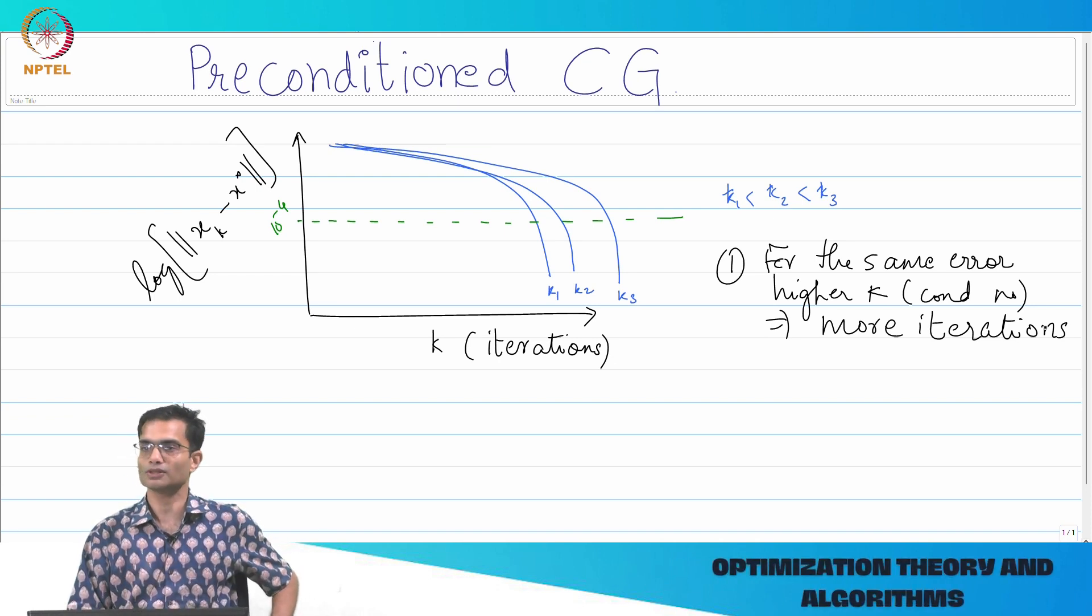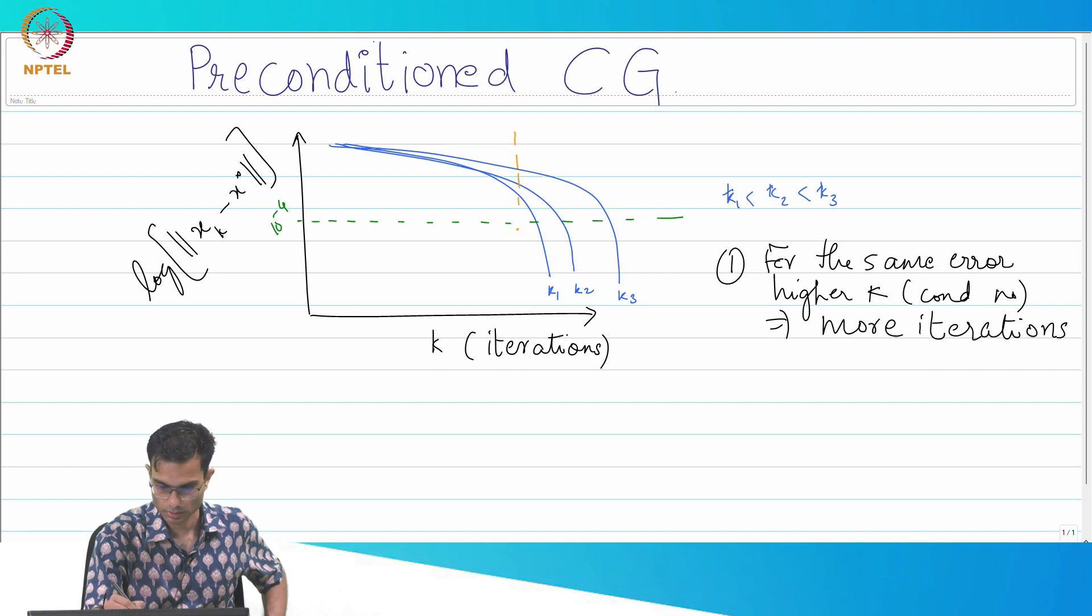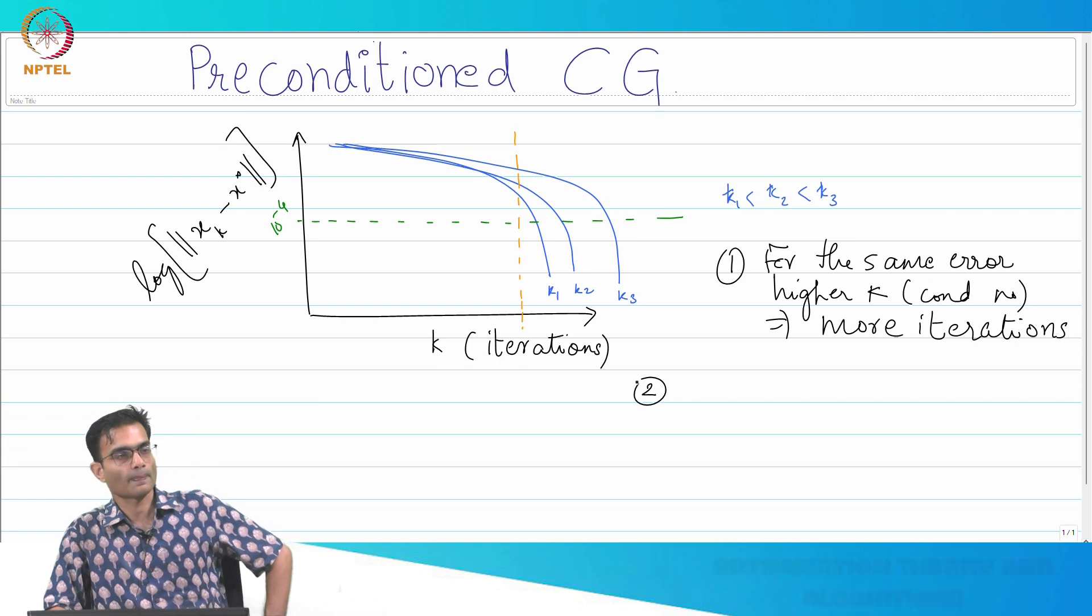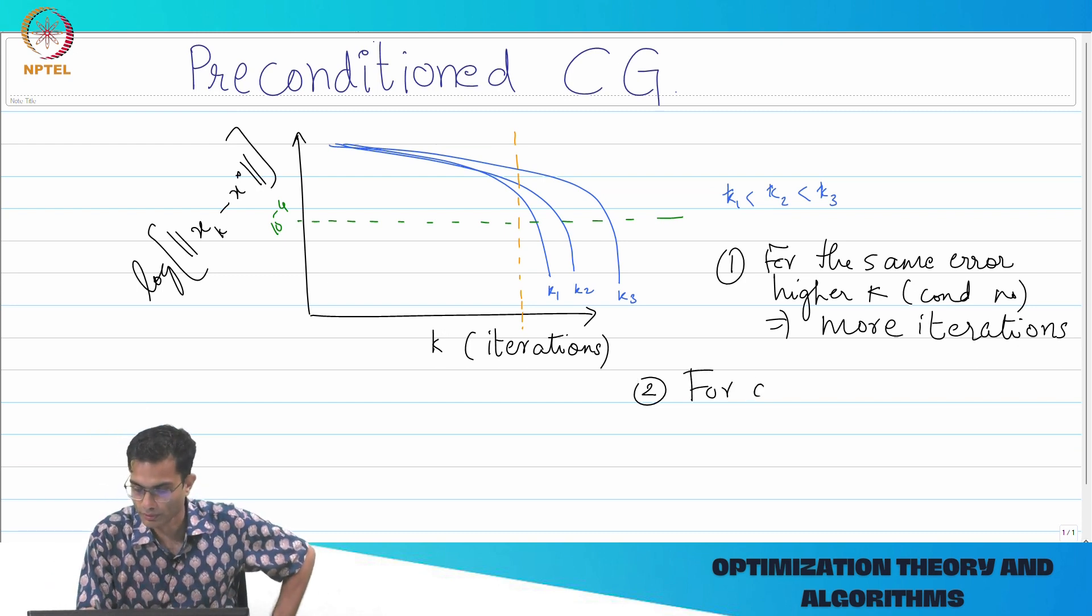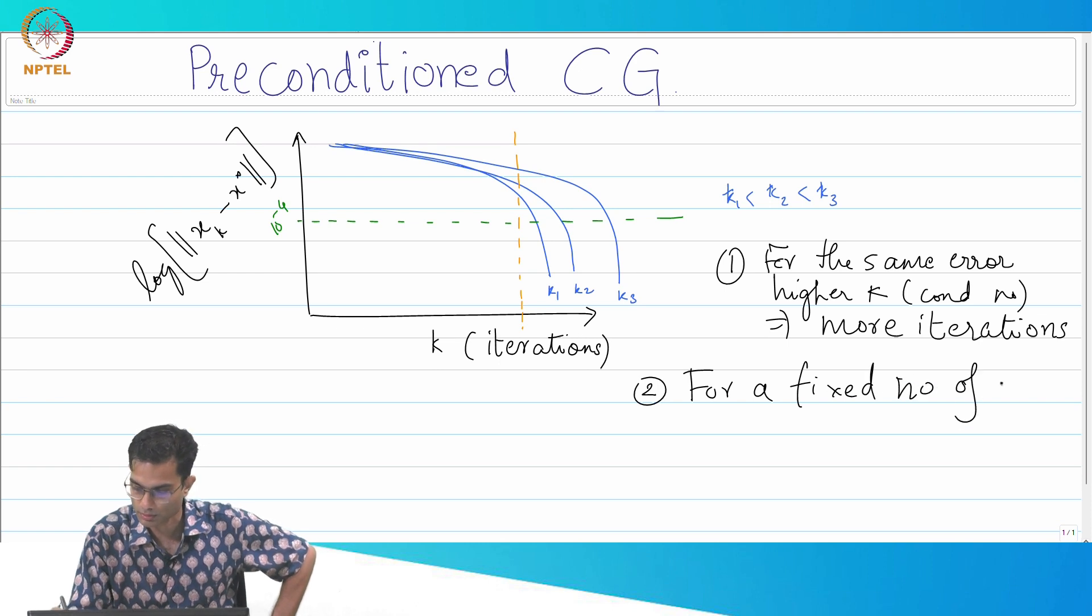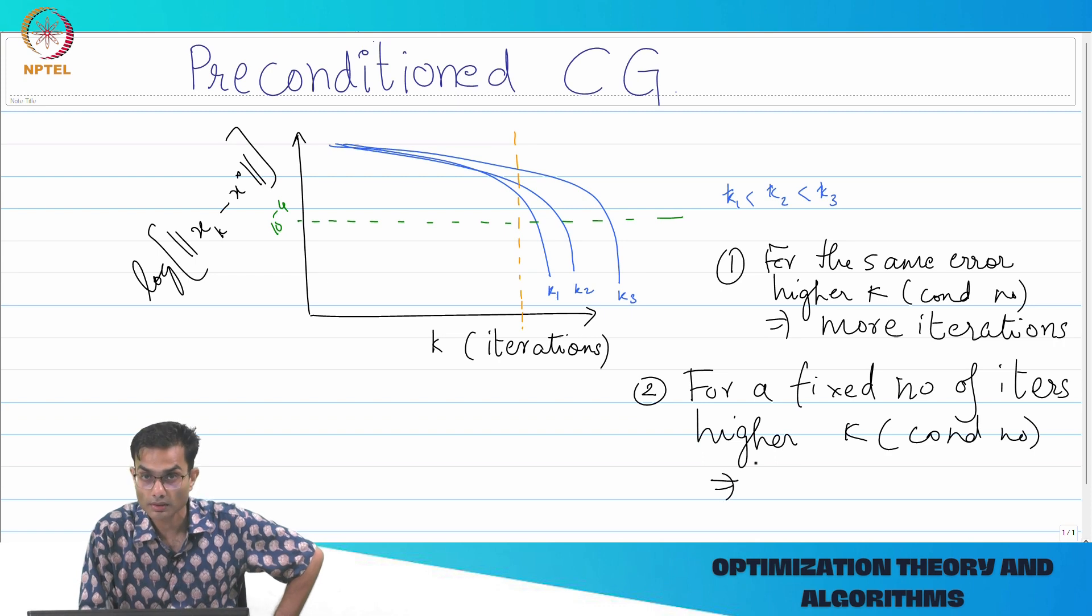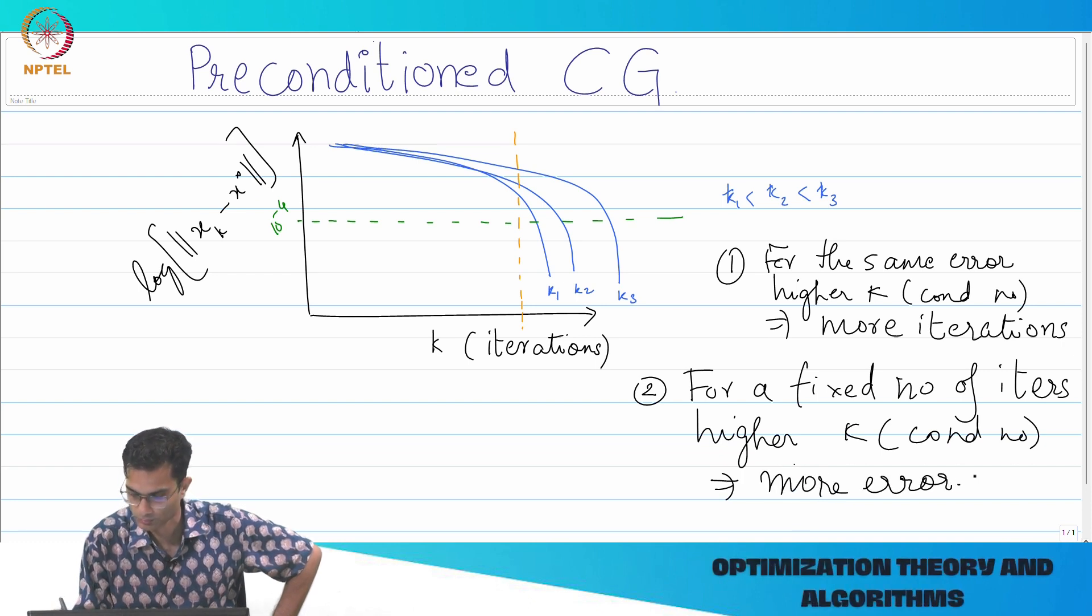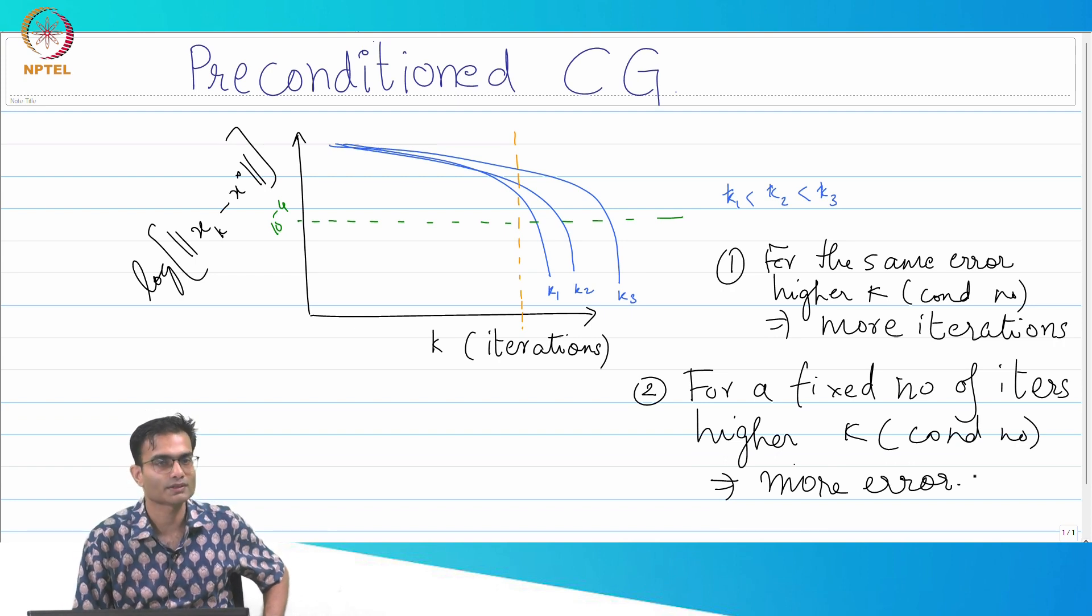For higher condition number implies more iterations, that's obvious. And if I had fixed computational resources, if I wanted to devote only so many iterations to this problem, that would be a vertical line on this graph. What is our observation looking at this vertical line? That if I have a fixed number of iterations, the one with a higher condition number has higher error. For a fixed number of iterations, higher kappa implies more error.